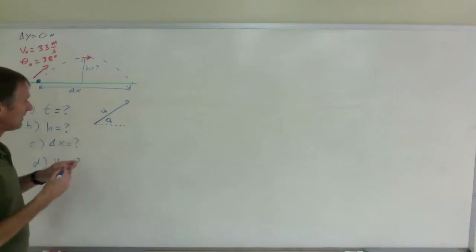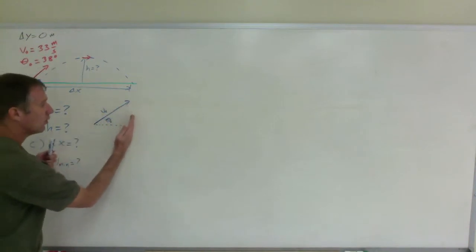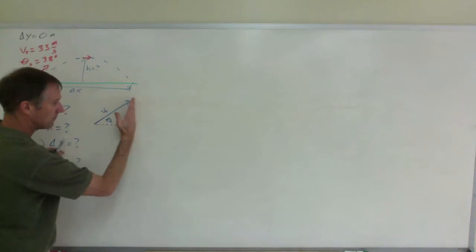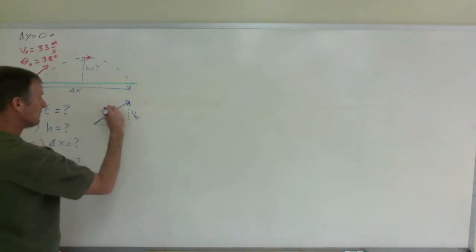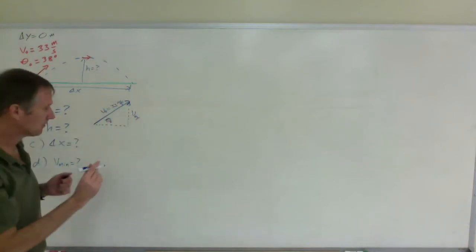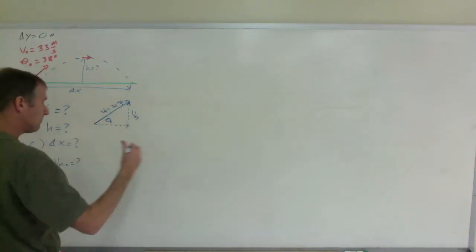The problem is we cannot solve these questions with 33 meters per second. To figure out how high it goes, I need to know how fast it is going up. That is that length right here, what I have labeled v sub zero y. Of the 33 meters per second, how much of that is upwards at that moment? We also will need to know, in order to find the range, how much of that is to the right. That is v sub zero x, and so that requires doing some trig.